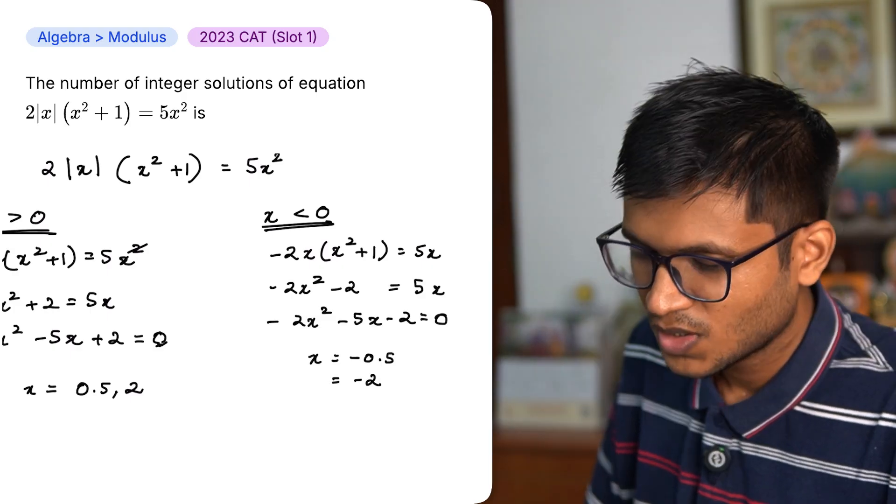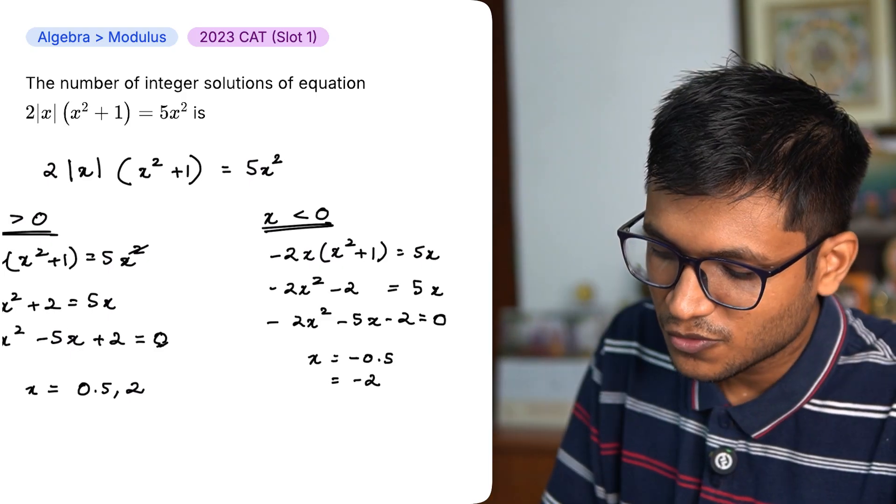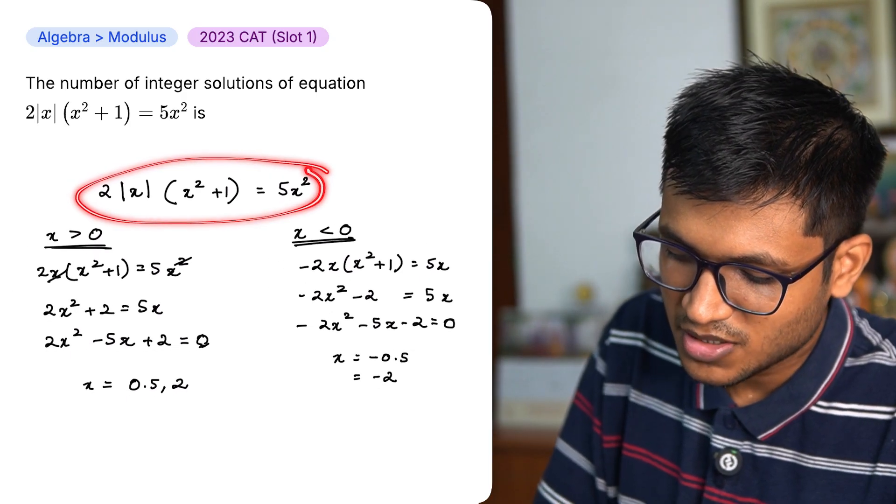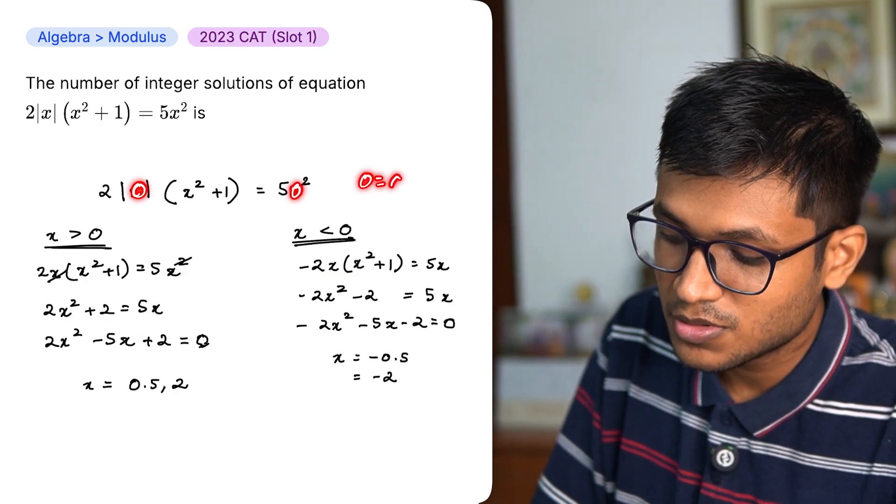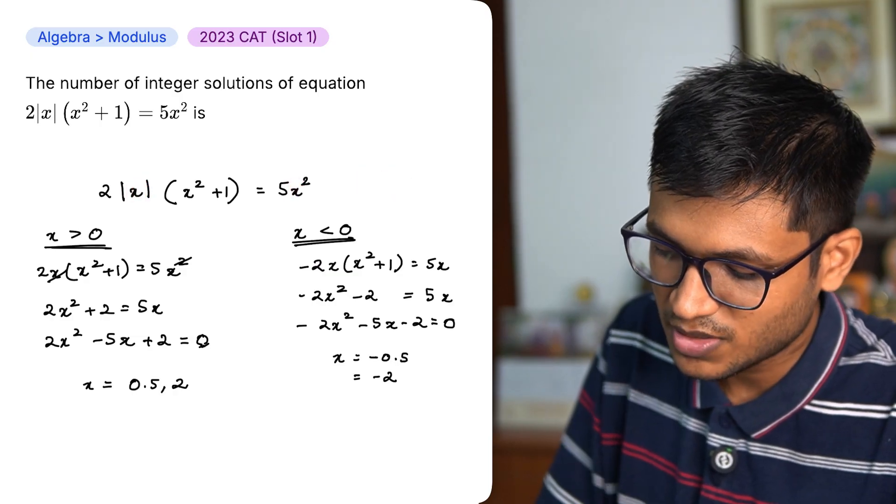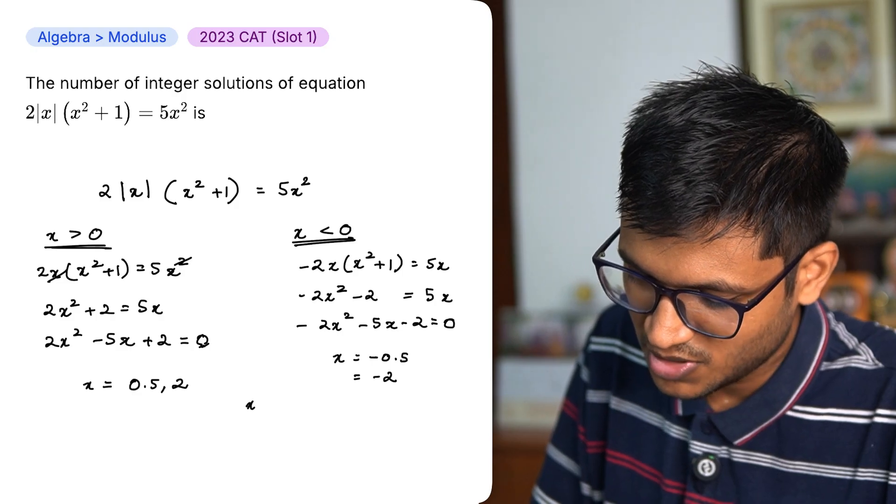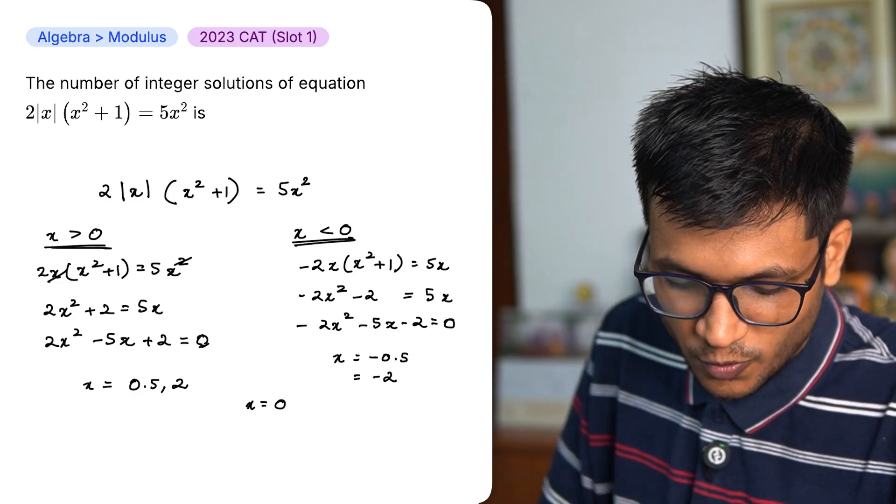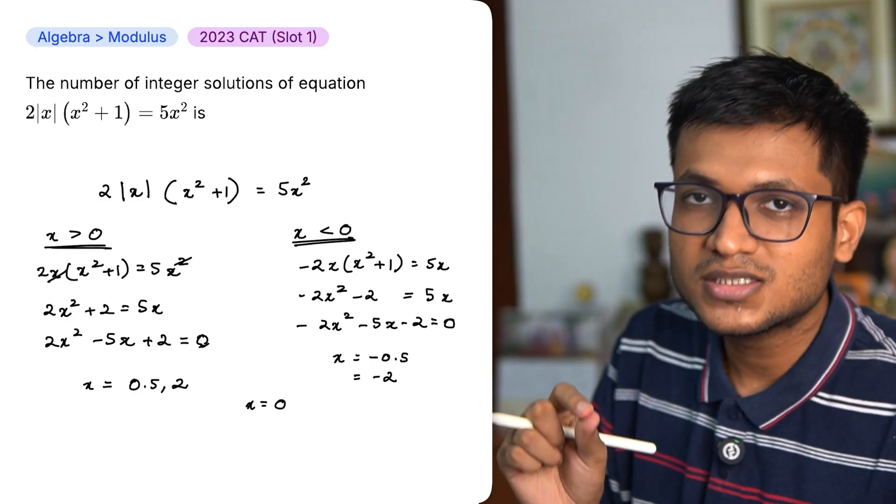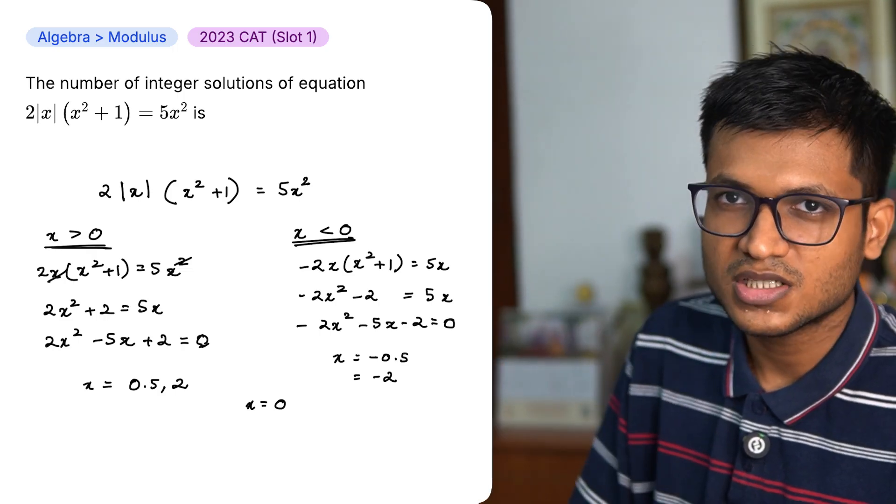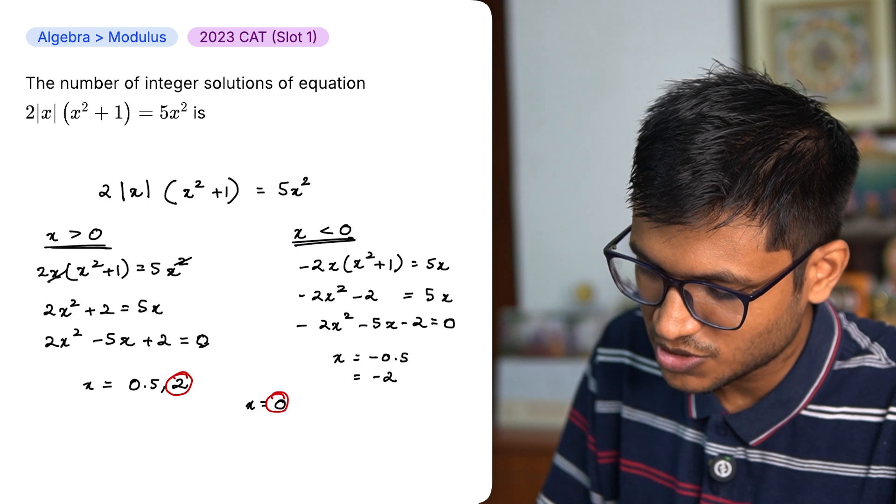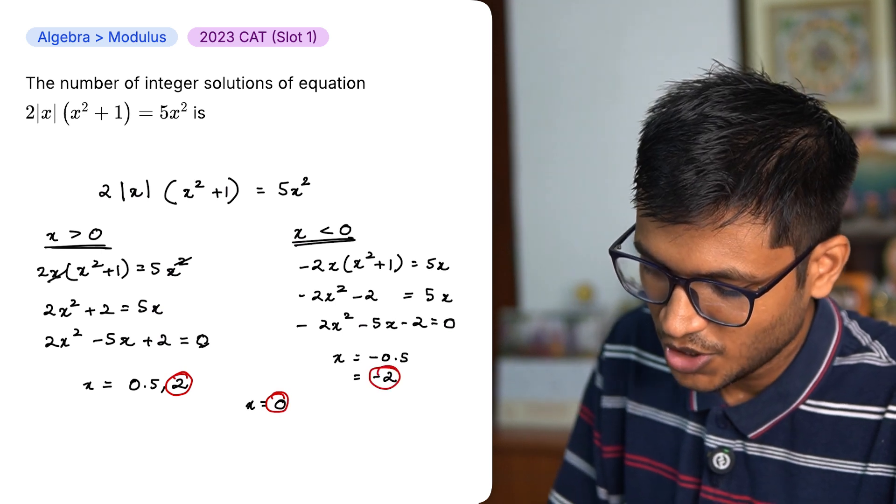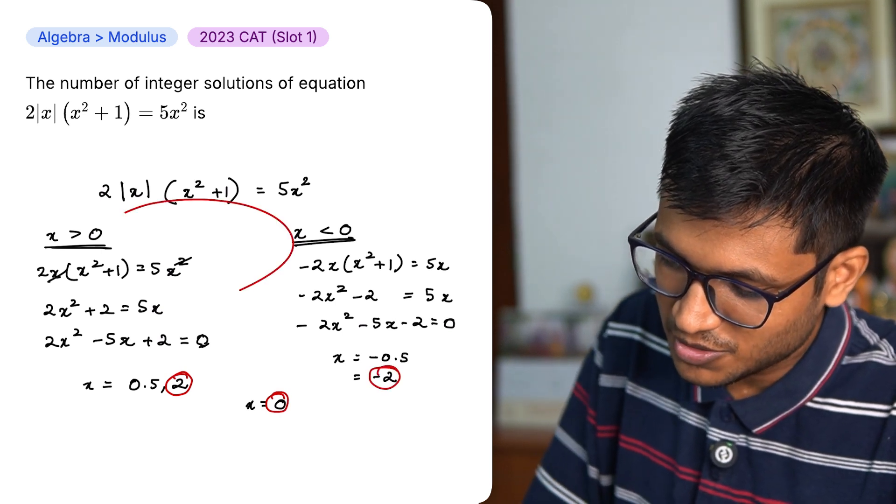Similarly, take x less than 0 and now you get two more values. If you look at this and put x equal to 0, you're going to get both sides as 0 equal to 0. So 0 can also be an answer. So always test for that once. So x can be equal to 0. Question asks us the number of integer solutions. Integer solutions means decimals. So this is an integer solution, this is an integer solution and this is an integer solution. So 3, we have 3 integer solutions.